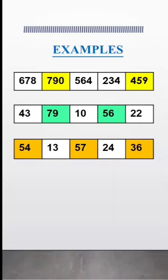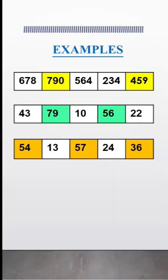Examples. 678, 790, and 564. 678 and 564 are adjacent cells and 790 is the cell between them. 790 is greater than its adjacent cells, therefore 790 is the supercell.